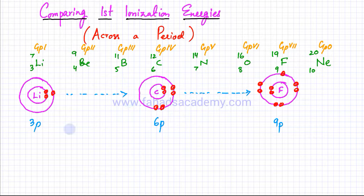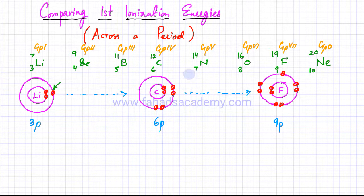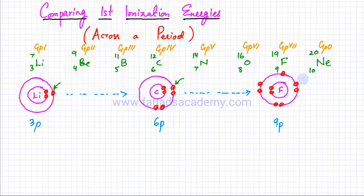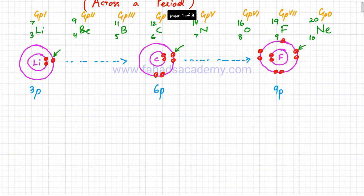I've drawn lithium and I'm going to try and remove this particular electron from it. I've also drawn carbon — I'm going to remove this electron from carbon, the outermost electron. We're talking about the first ionization energy. I've also drawn fluorine and I'm going to try and remove this particular electron from fluorine.